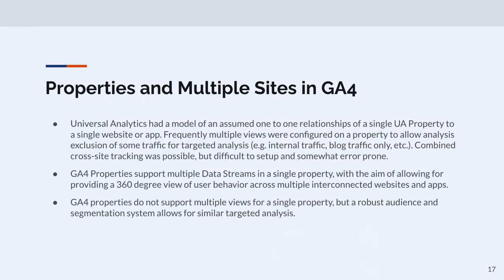One other quick thing: GA4 used to have properties where you'd have multiple views of a property. Views don't exist anymore — it's just properties and you can have multiple data streams pointing to a single property. This lets you have a nice 360 view of users across multiple websites or an app and a website. Filtering for internal traffic and things like that is a different model now, so you have to re-examine how you were doing things under UA, particularly if you have the automatic upgrade.